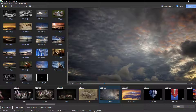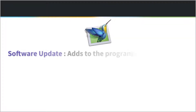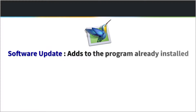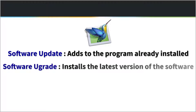So, an update adjusts the software you already have installed on your computer. An upgrade is installing the latest and improved version of the software, which will generally require a different product key and maybe some cost.